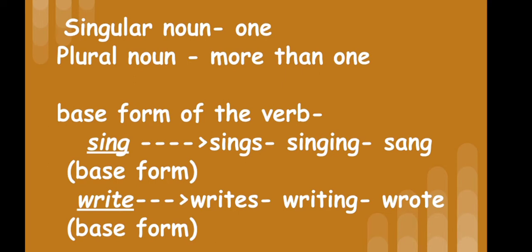What is a singular noun? When we have one person, one animal, one thing, or one place, we call it a singular noun. When we have more than one person, animal, place, or thing, we call it a plural noun. One is singular, more than one is plural. Now, the new thing we have to learn is about the base form of the verb. What is a verb? A verb is an action word or doing word — the main actions we do with our body.